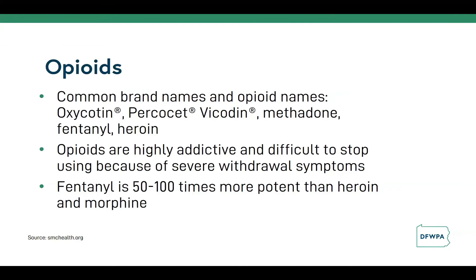Using opioids again after a period of abstinence is especially dangerous because the person is inclined to use the same amount they used last time, which often results in an overdose. Fentanyl is a synthetic opioid similar to morphine or heroin, but it is 50 to 100 times more potent. It is a fast, rapid-acting synthetic opioid that alleviates pain — a Schedule II prescription drug typically used to treat chronic or terminally ill patients.